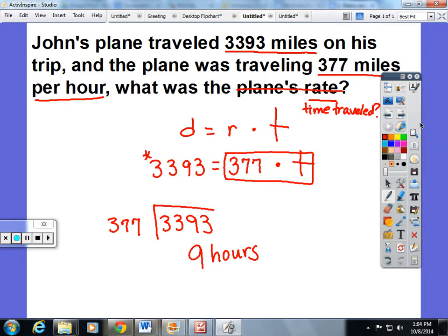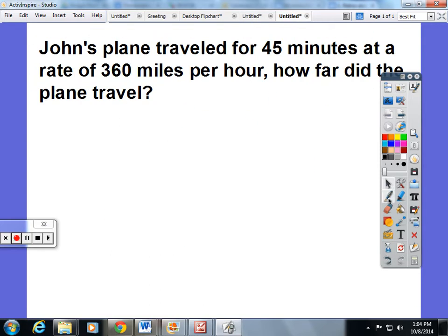Let me give you one other type of problem. And I promise this is the last one. John's plane traveled for 45 minutes at a constant rate of 360 miles per hour. How far did the plane travel? So again, we encourage the kids to use the distance formula. And we have to identify the parts here.